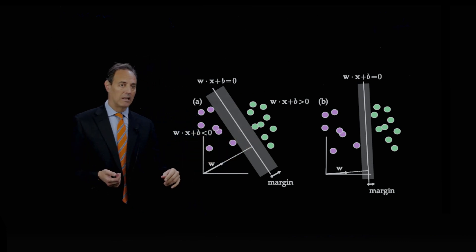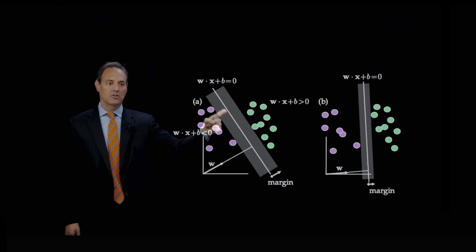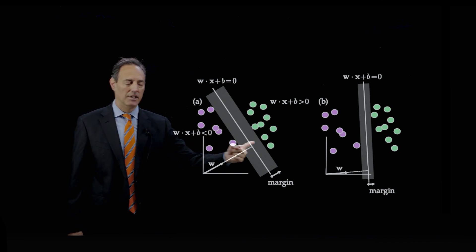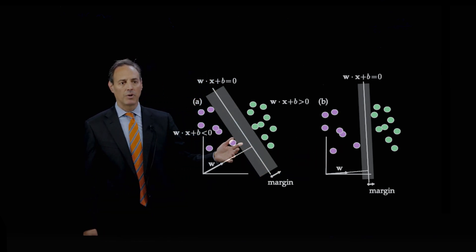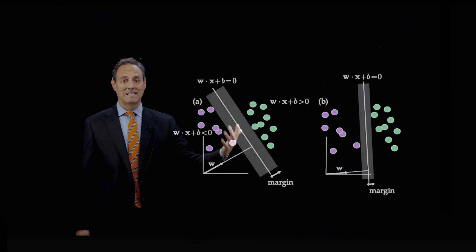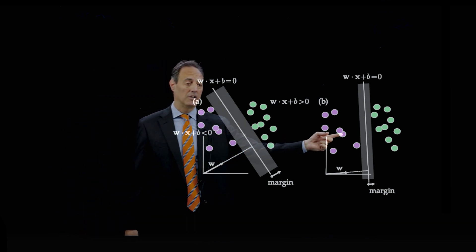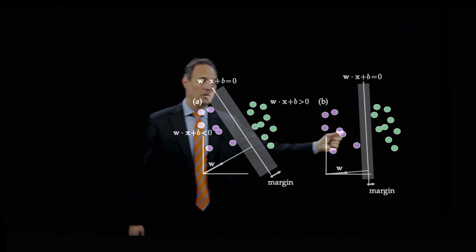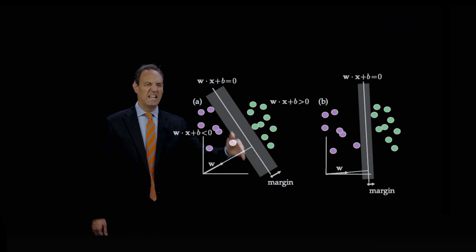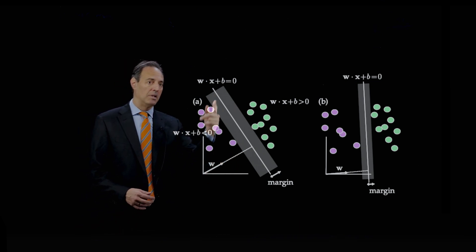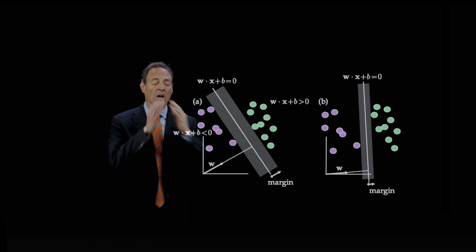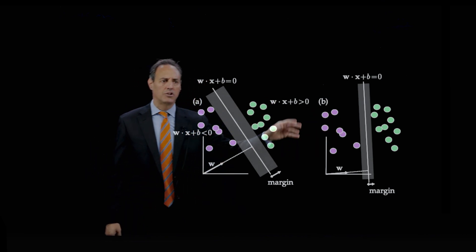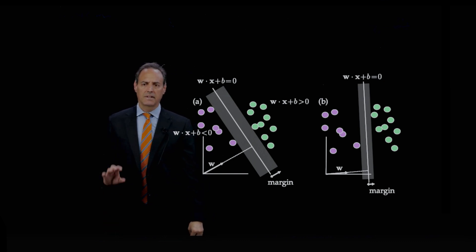Here is a good representation of the SVM. Here is a poor representation. Notice that both of them in training would give me perfect separation of the data, but here the margins are much larger versus there. My goal is then to find a W vector and b that will allow me to basically optimize that margin.